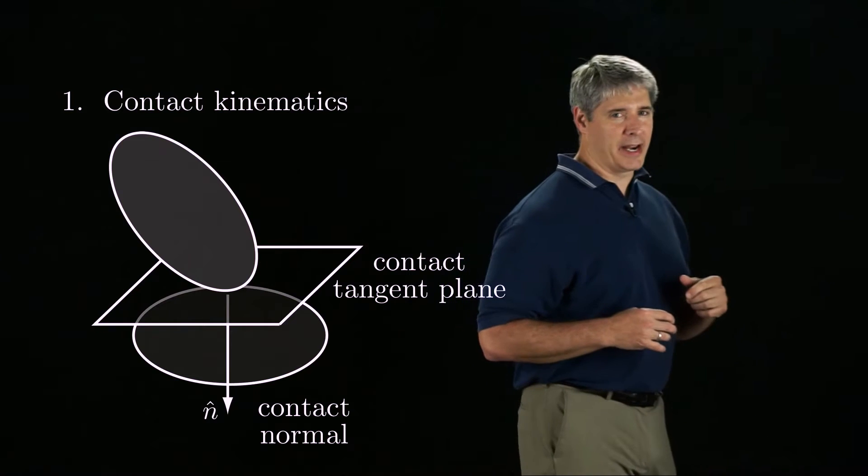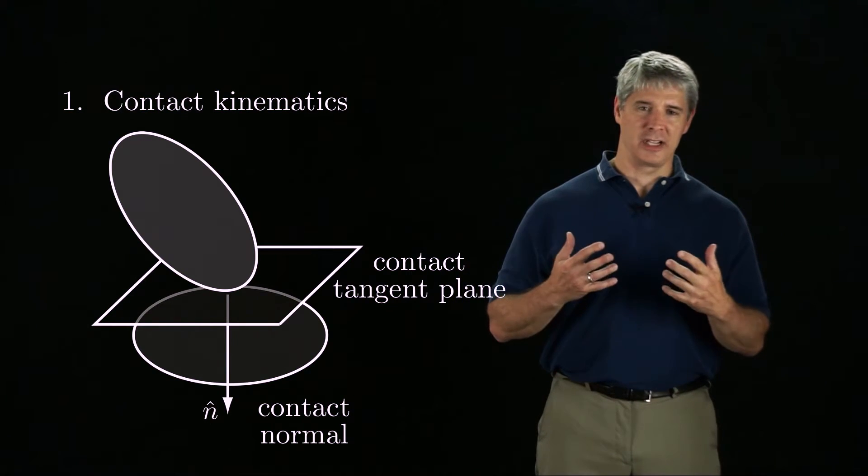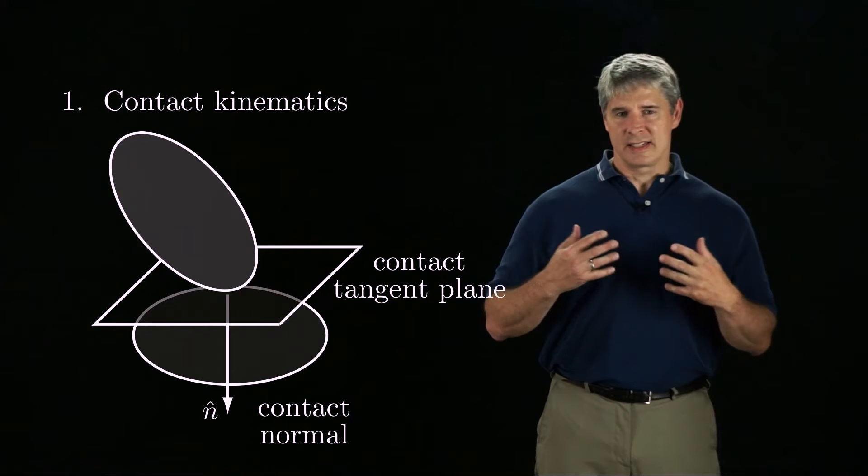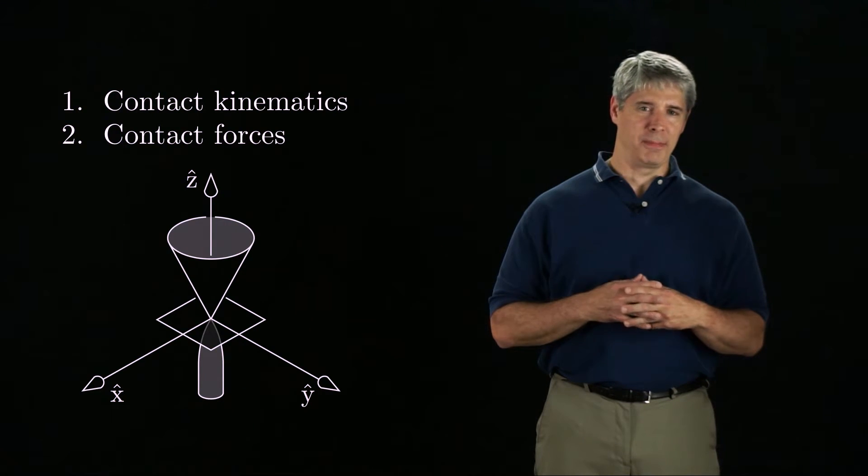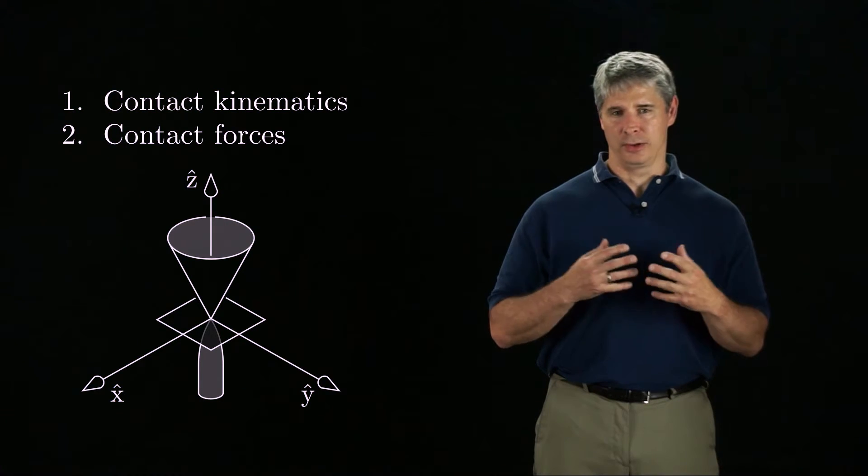We assume that the objects are rigid bodies. To analyze manipulation of rigid bodies, we need three ingredients. First, contact kinematics tells us how a contact between two rigid bodies constrains the motion of each. Second, we need a model of forces that can be transmitted through a contact, including frictional forces.